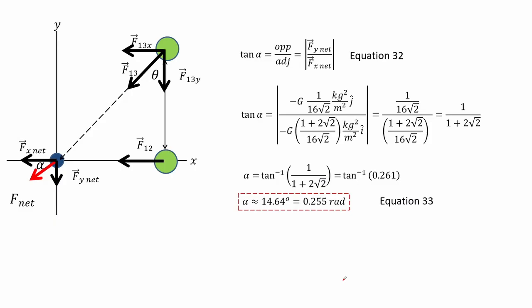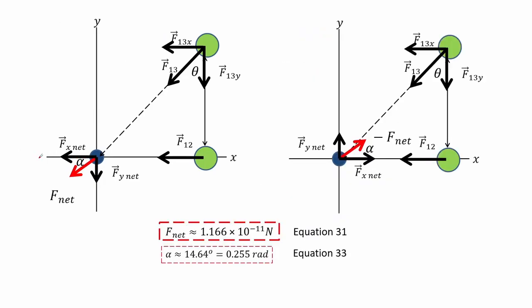Using the tangent function, where it is the ratio of the y-component over the x-component as shown in equation 32, we get that the angle is about 14.6 degrees or 0.25 radians. The magnitude and direction are given by equations 31 and 33. Graphically, the orientation of the net force can be presented by both images, where the angle alpha is measured along the x-axis.